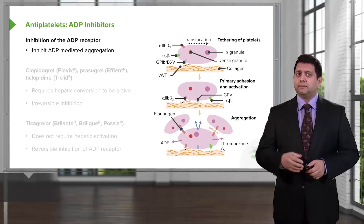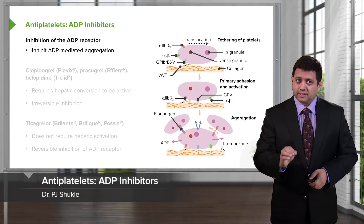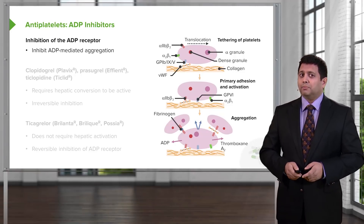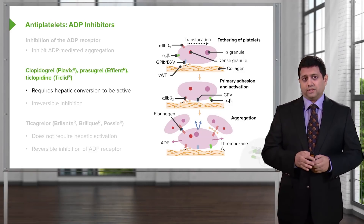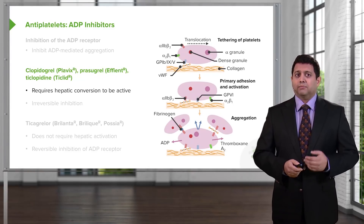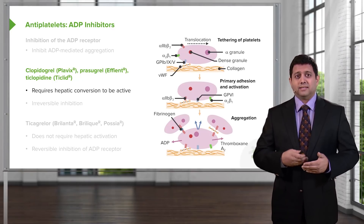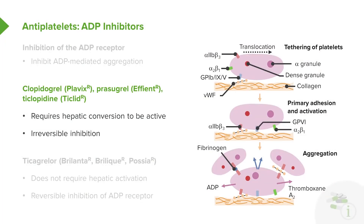The ADP inhibitors are another drug class — you need to know this for your exam, so pay close attention. Clopidogrel and prasugrel are the two drugs currently used in clinical practice. They require hepatic conversion to be active, so they don't act right away — they take some time to work. They are also irreversible inhibitors of platelet function.